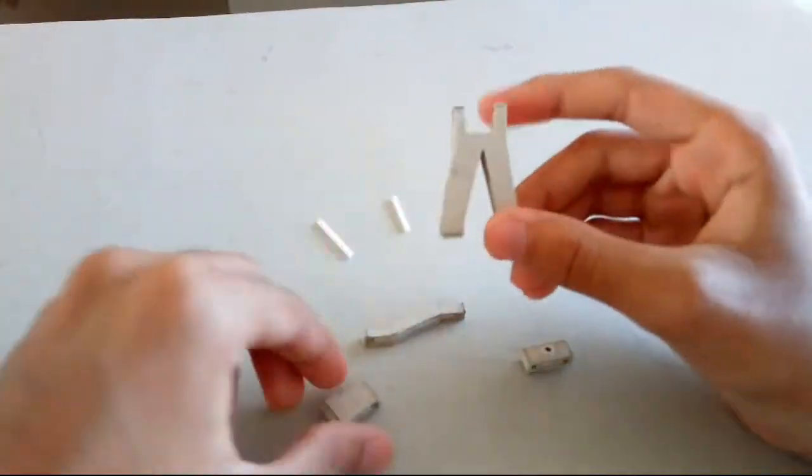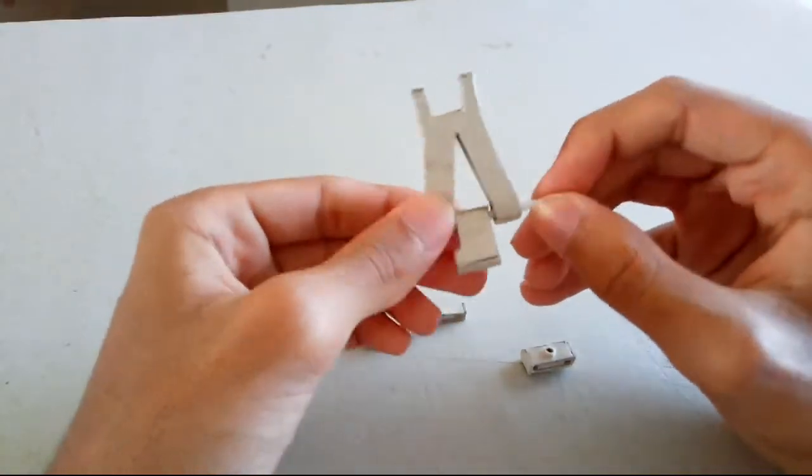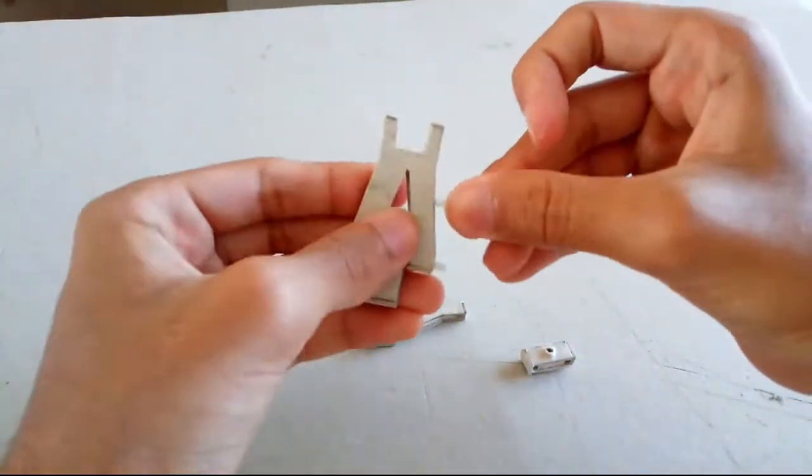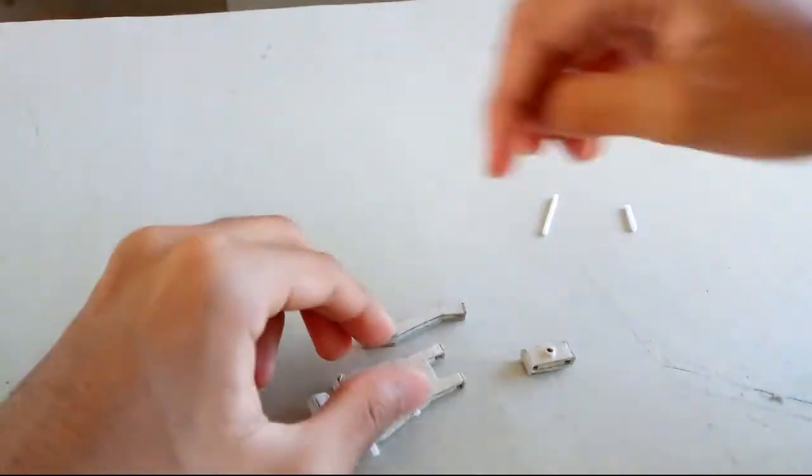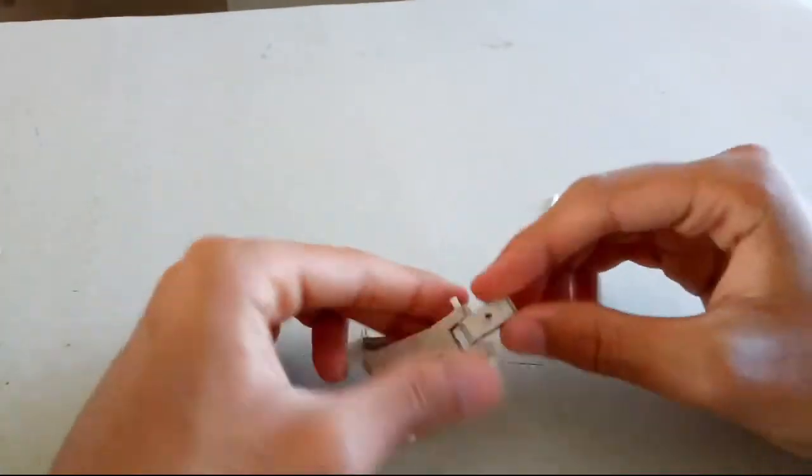Once you have all the pieces you can start assembling them and I'll just fast forward through this one. Now keep in mind that some of these pins are a little longer than they need to be and I'll show you later on how to seal them, but you only need to do that near the end when you're sure of everything.